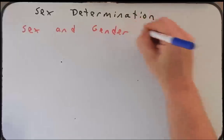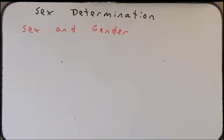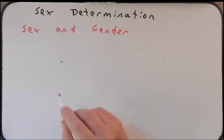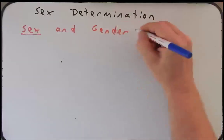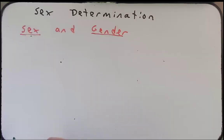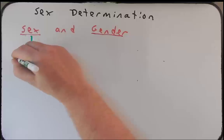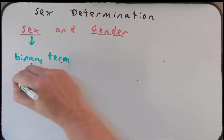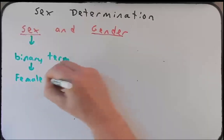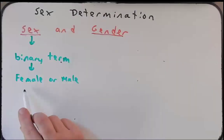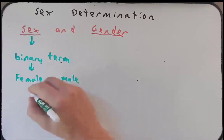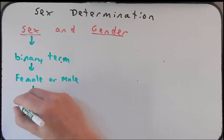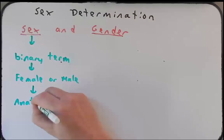Sometimes we may confuse these terms and use them interchangeably but we really shouldn't. When we think about genetics and the genetics of sex determination we're really talking about sex and not gender. So when we talk about the term sex in genetics we talk about it as mostly a binary term, meaning that individuals are typically either female or male. The difference between females and males at the genetic level will help determine whether male or female genitalia form — that binary difference is based largely on anatomy and physiology.